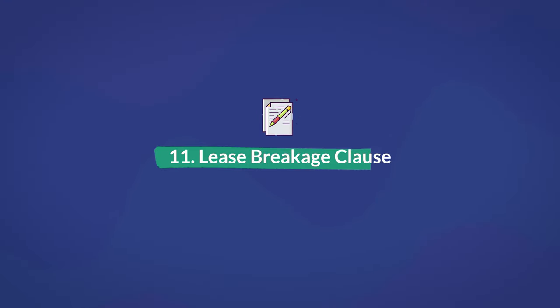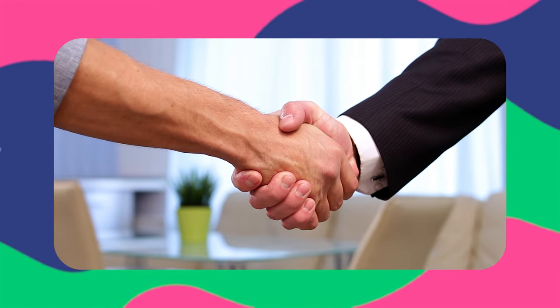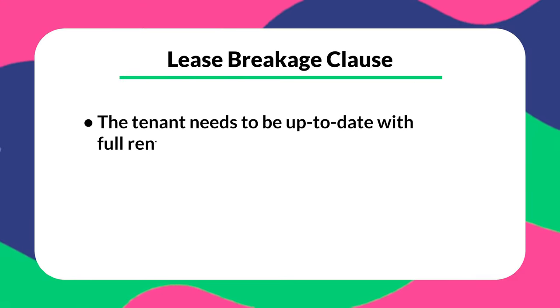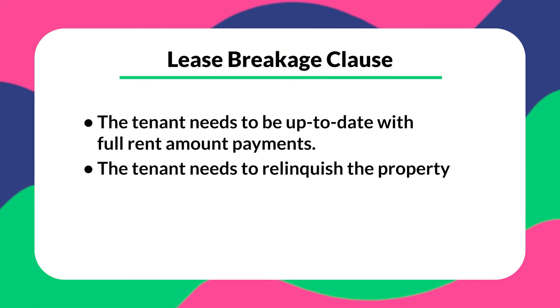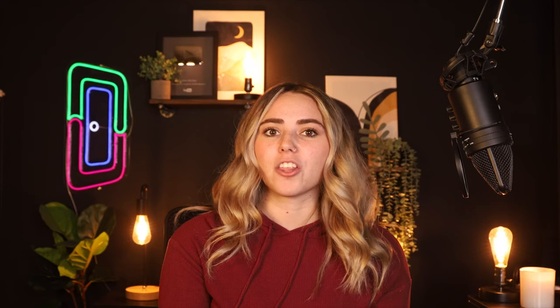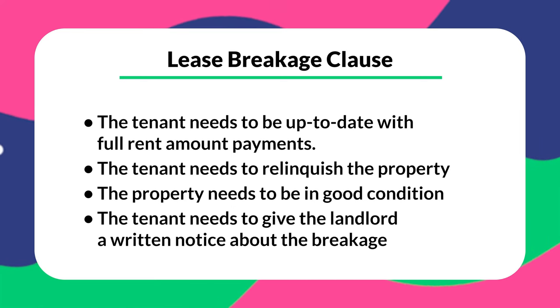Number eleven is a lease breakage clause. This specifies the right for both the landlord and the tenant to terminate the lease at an agreed point in time, ensuring more flexibility for both parties. Some conditions may still be required to be met for the breakage terms to apply. The conditions might include: the tenant needs to be up to date with full rent payments, with no pending late fees or additional requirements; the tenant needs to relinquish the property; the property needs to be in good condition, otherwise the tenant shall be responsible for repair fees; and the tenant needs to give the landlord written notice about the breakage, which could be from six months up to one year of notice.